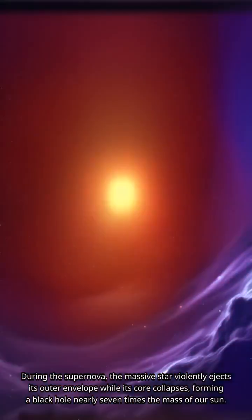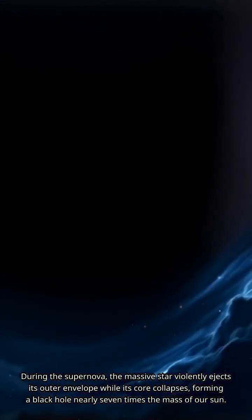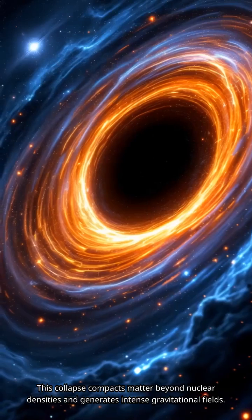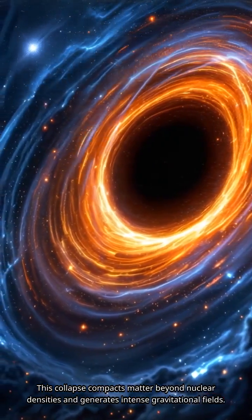During the supernova, the massive star violently ejects its outer envelope while its core collapses, forming a black hole nearly seven times the mass of our Sun. This collapse compacts matter beyond nuclear densities and generates intense gravitational fields.